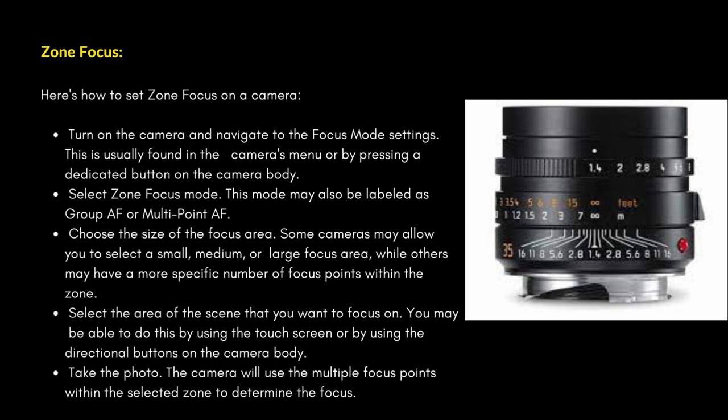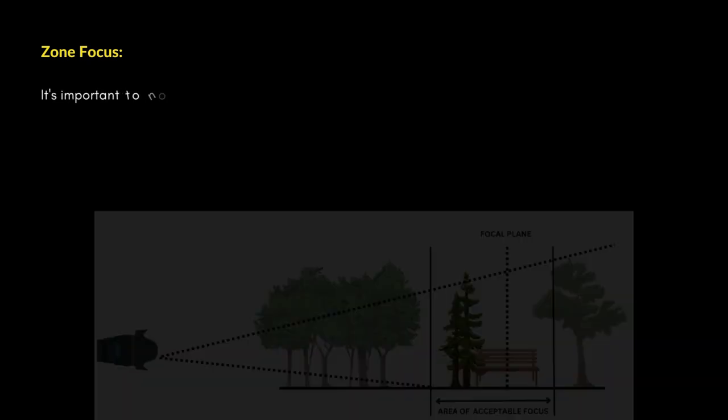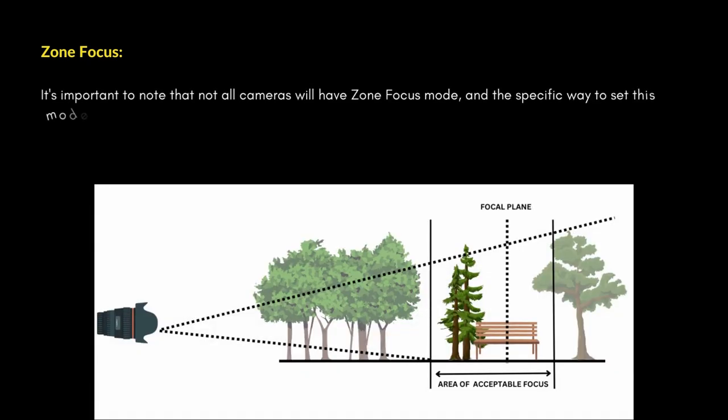Select the area of the scene that you want to focus on — you may be able to do this using the touch screen or the directional buttons on the camera body. Then take the photo; the camera will use the multiple focus points within the selected zone to determine the focus.